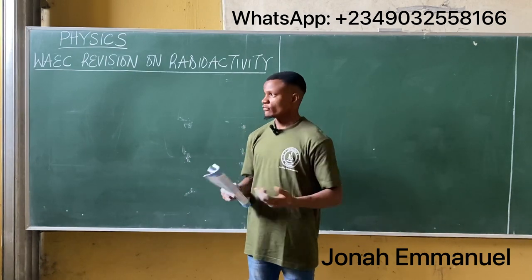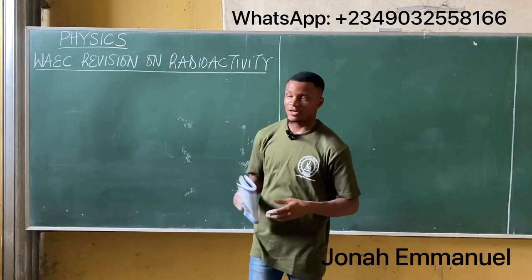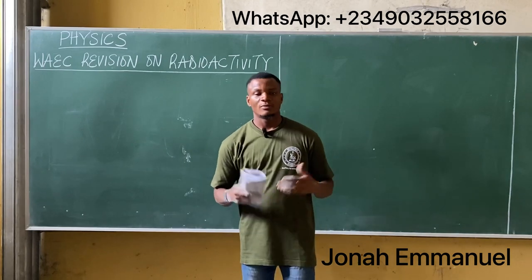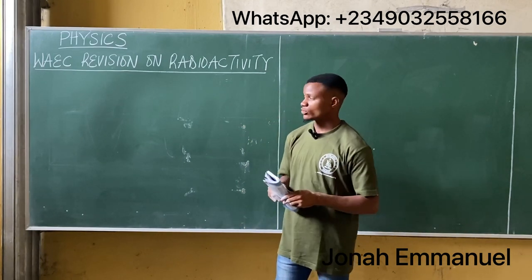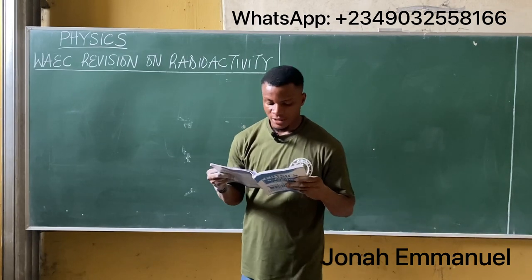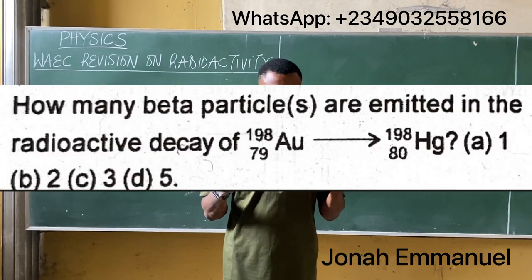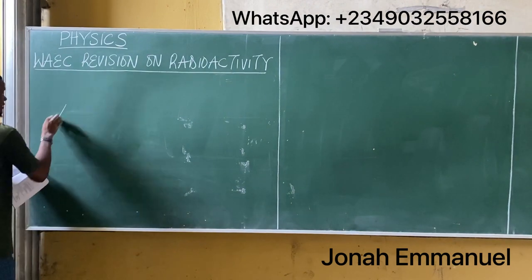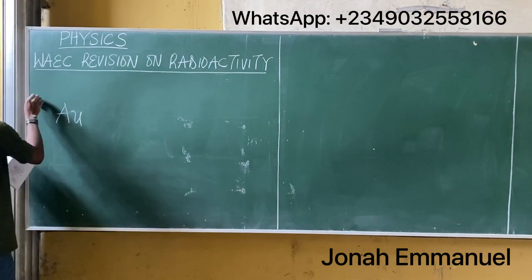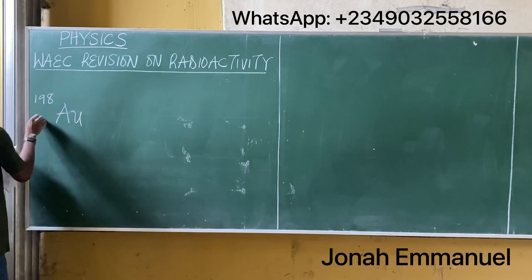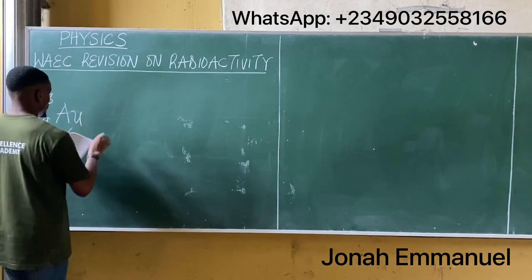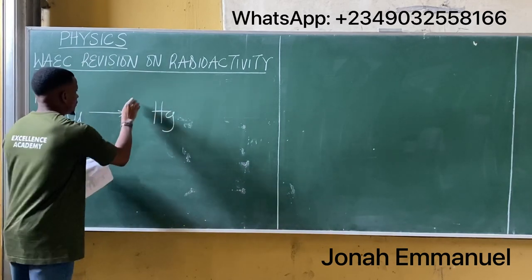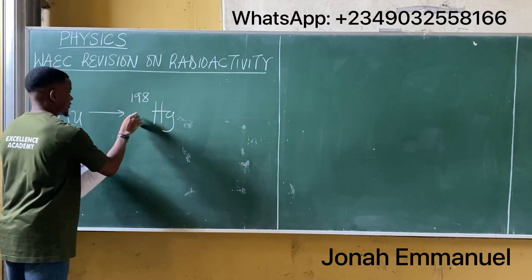Welcome to today's class. This is a revision class on radioactivity. We'll take some past questions and solve them together. This question asks: how many beta particles are emitted in the radioactive decay of gold-198 (atomic number 79) to give mercury Hg-198 (atomic number 80)?